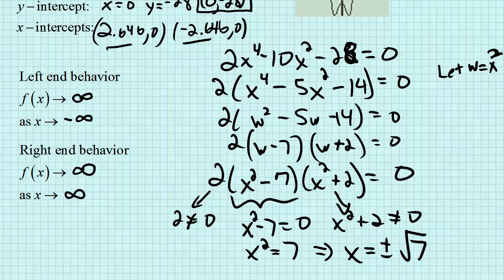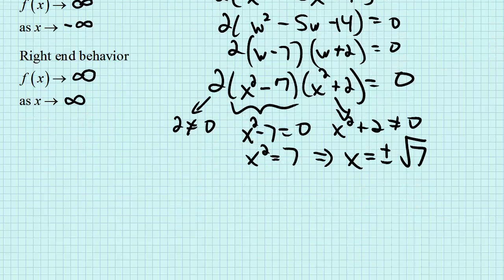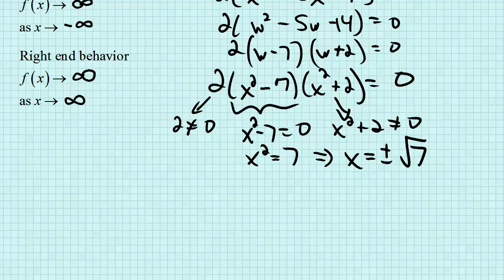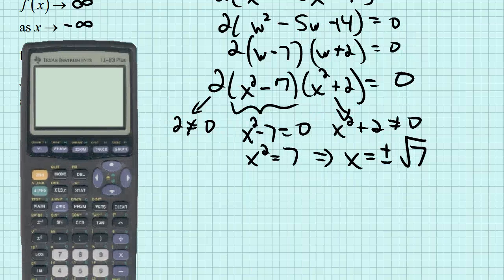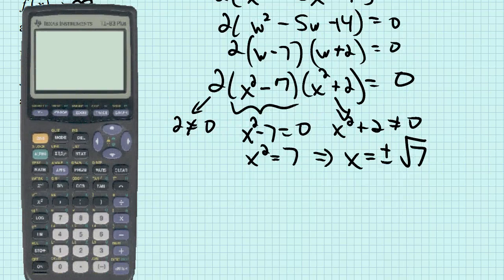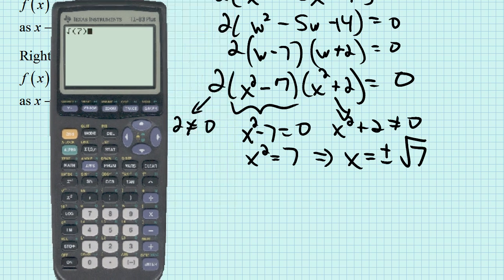If you throw that into a calculator, you'll find that you get the same values that we had before. If we throw the square root of 7 into a calculator, we should get that same 2.646 rounded to three decimal places.